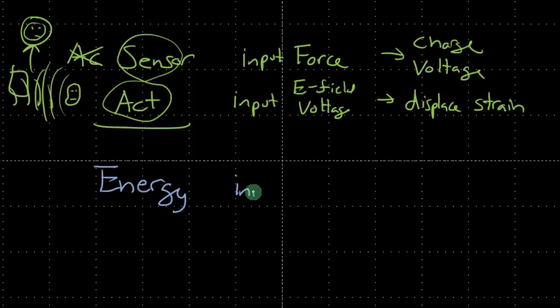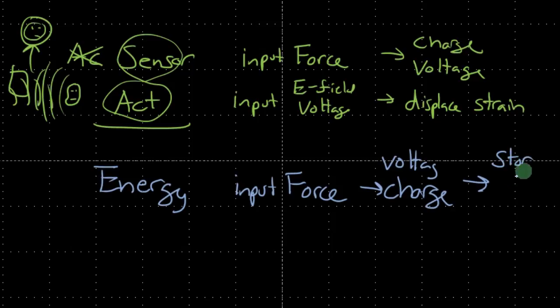In this case, the input is force. The result is charge or voltage, and then we make it one step further and we convert that to stored energy. So we're sort of using ambient vibration to charge a battery or power devices, low power devices - charge batteries, store energy, this is electrical energy. The other application is in active damping.